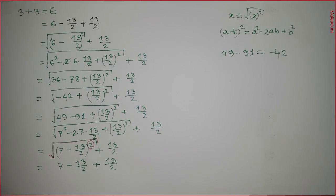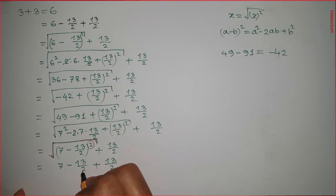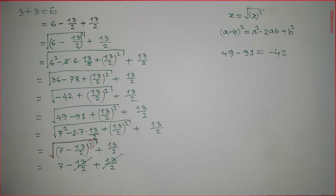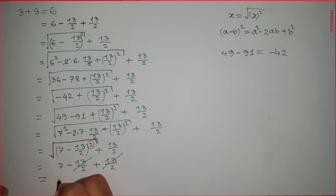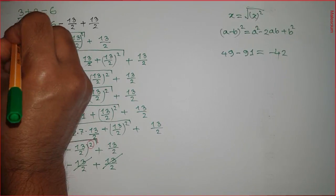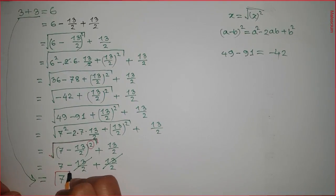Now this is the interesting part — look at here. This minus 13 over 2 and this plus 13 over 2 cancel each other; they eliminate from the statement, and the remaining is 7. So I proved: I started with 3 plus 3 equals 6 and finally proved that 3 plus 3 is equal to 7. How is that possible? That's the question.